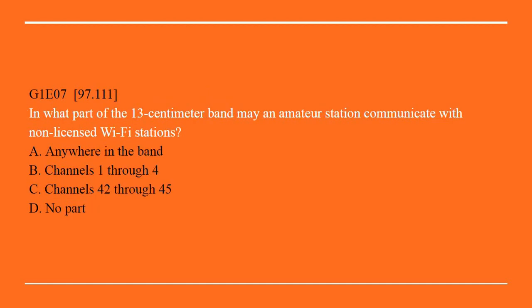G1E07: In what part of the 13cm band may an amateur station communicate with non-licensed Wi-Fi stations? A. Anywhere in the band. B. Channels 1 through 4. C. Channels 42 through 45. Or D. No part. Correct answer D: No part.